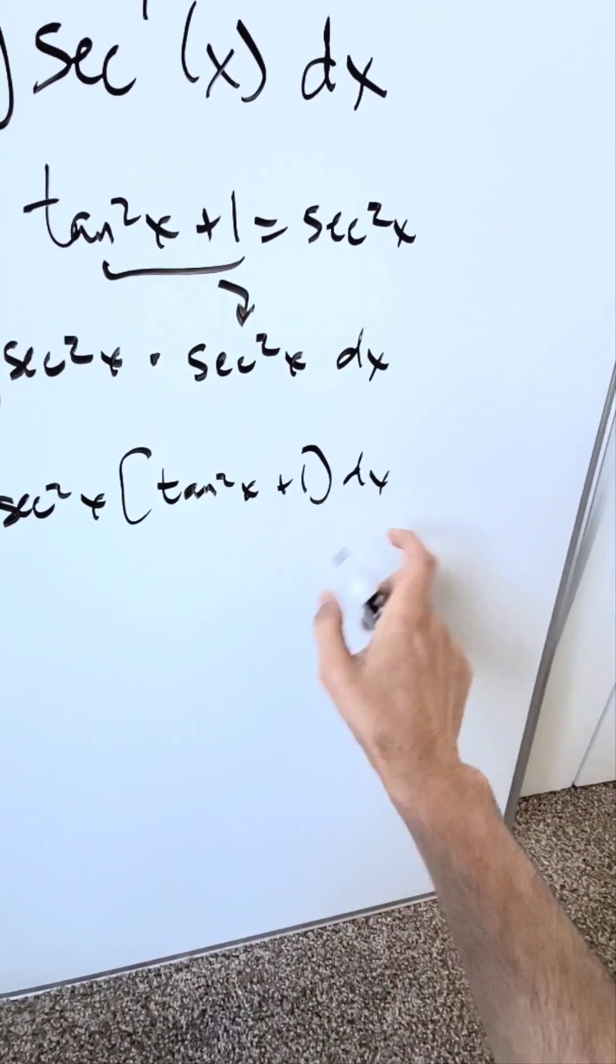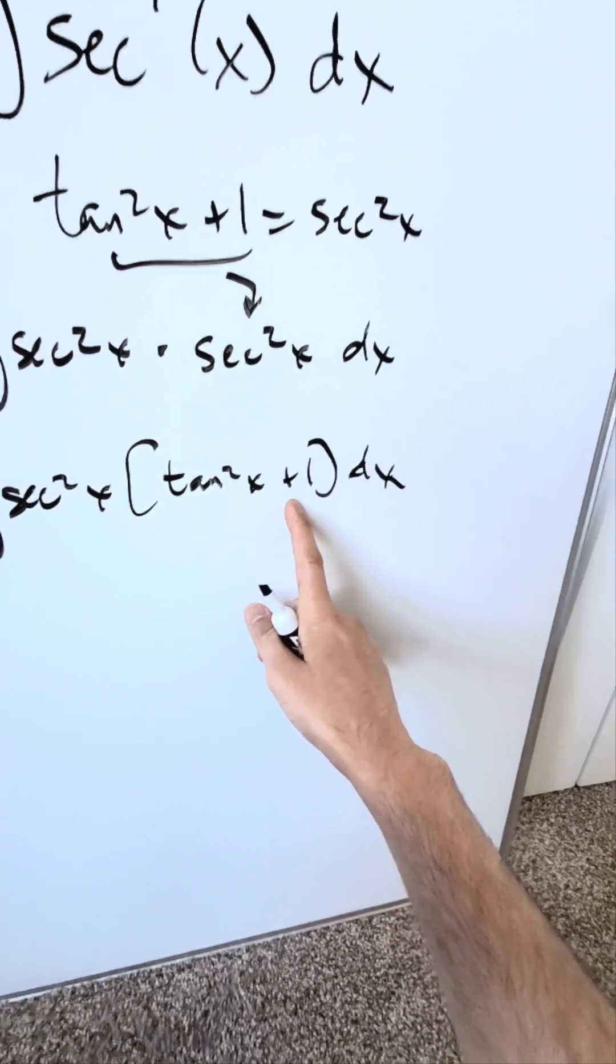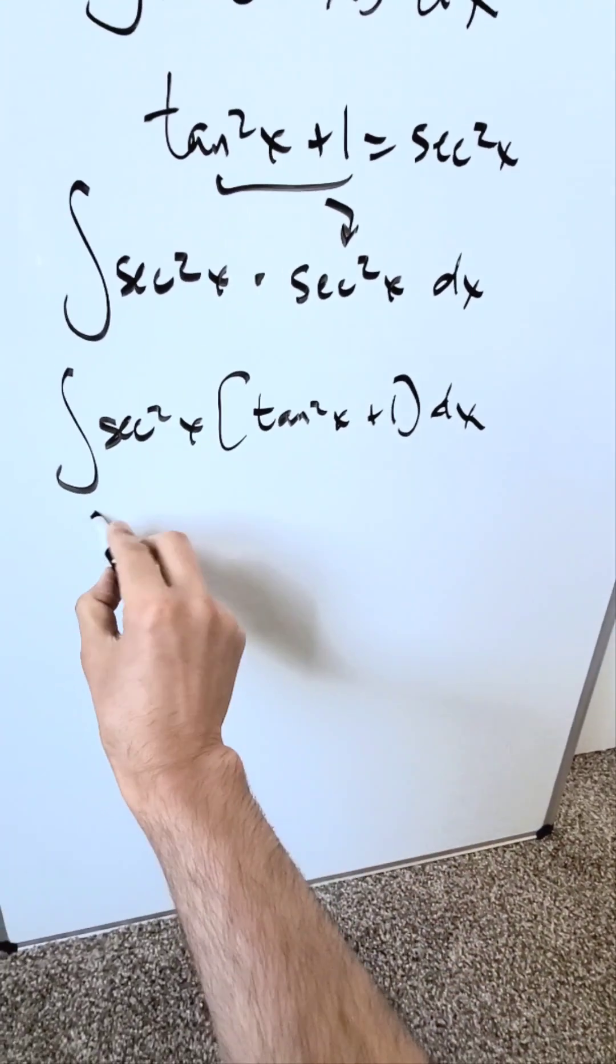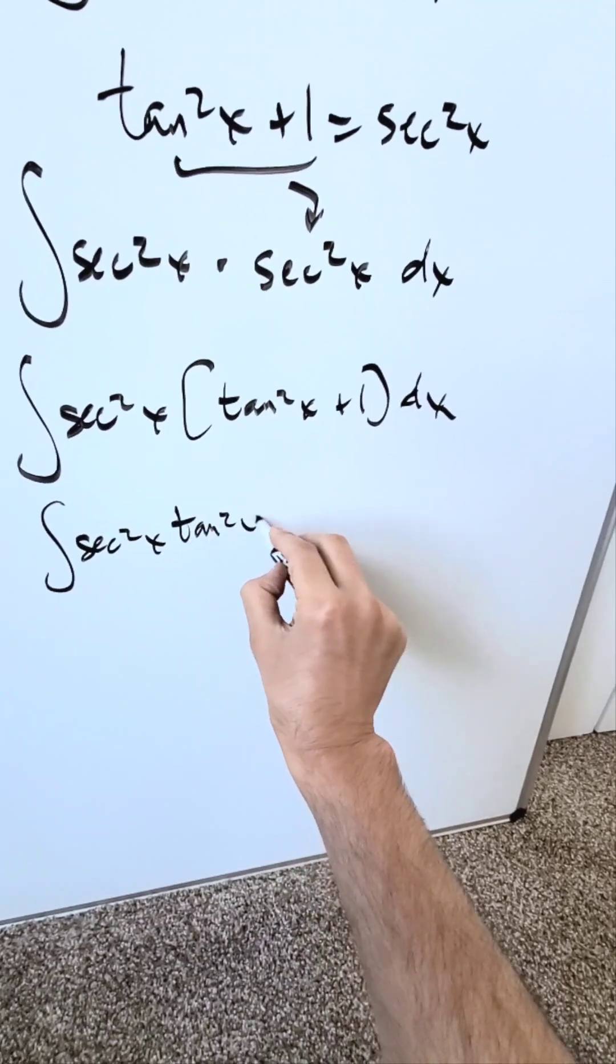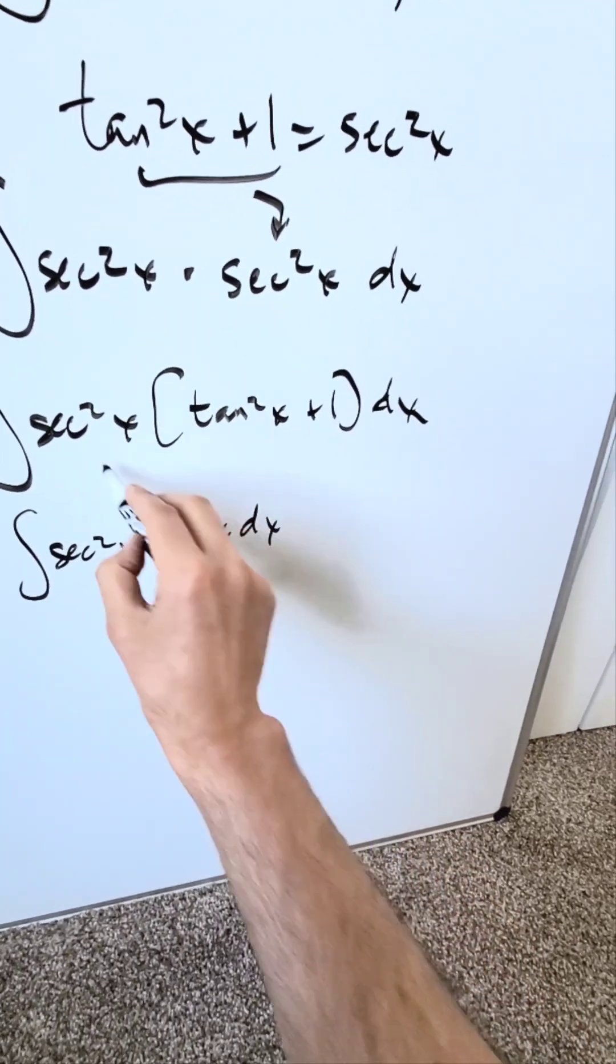Multiply everything across, distribute it, and then we'll separate our integrals across a positive sign. When you do that, you'll be looking here at the secant squared x tan squared x dx. That's one item, as you see.